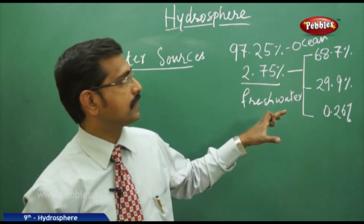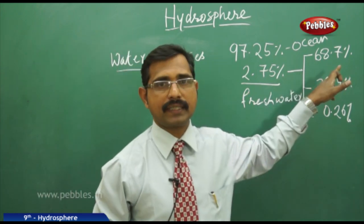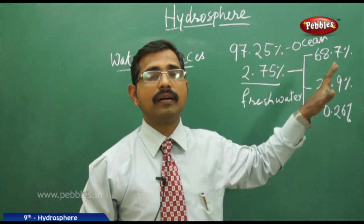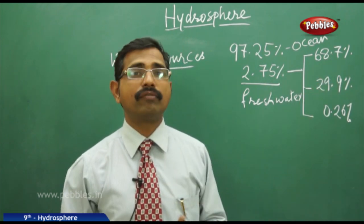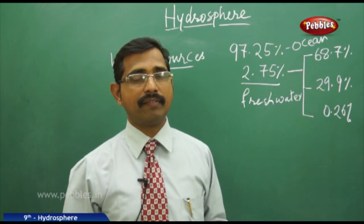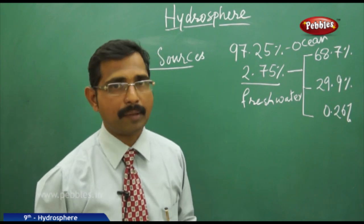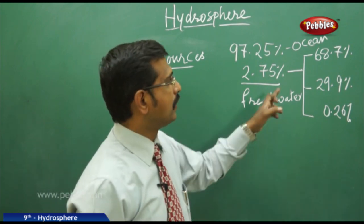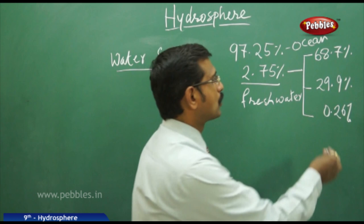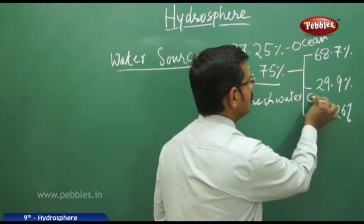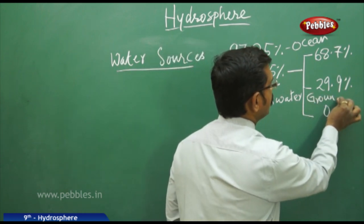Out of that 2.75% fresh water in Earth's crust, 68% is in the form of ice glaciers found in Antarctica, where there is no life due to the climatic conditions. We also have 29.9% as groundwater.